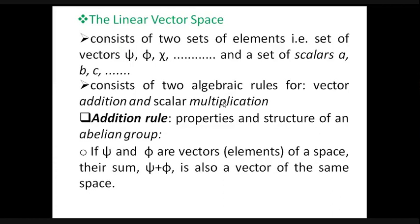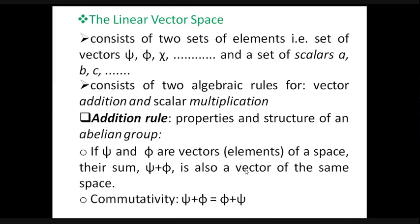For example, if psi and phi are two vectors or elements of a given space, then their sum is psi plus phi, and this sum is again a vector quantity. This third vector, which is the sum of these two elements, also belongs to the same space. So this is one property of addition: if we add elements psi and phi, the summation gives another vector, and that vector also belongs to the same given space. You cannot say that this sum will belong to a different vector space.